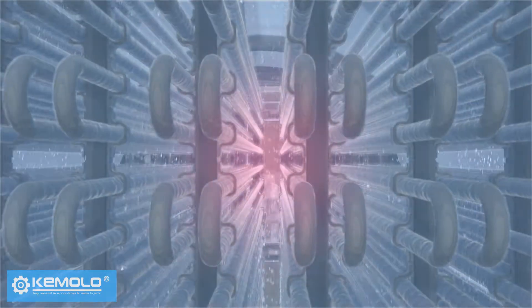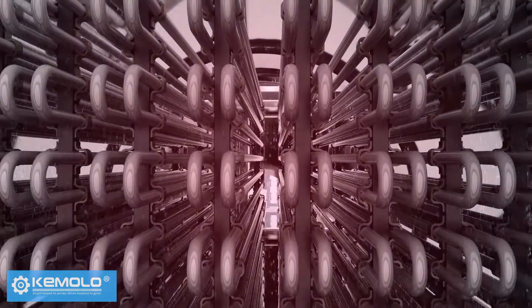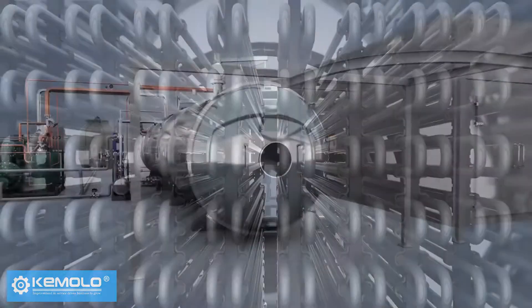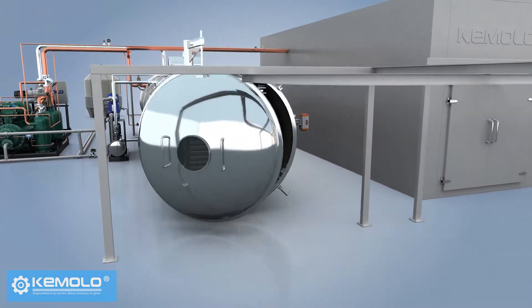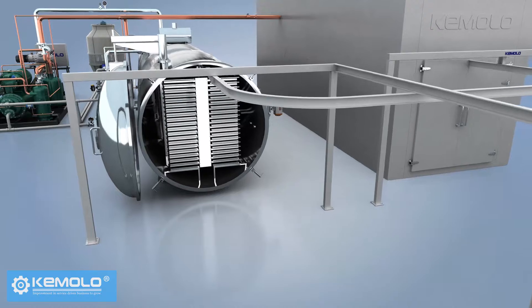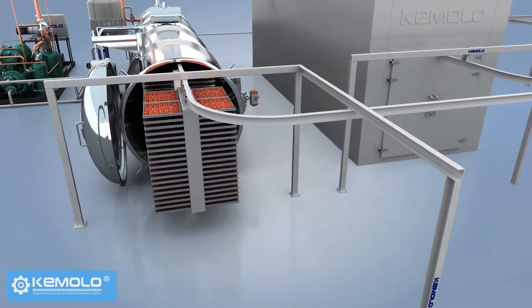After discharging, the frost on the water vapor collector needs to be defrosted for the next batch of production. Therefore, the freeze drying must be produced in batches and the interval between each batch is about 1-2 hours.